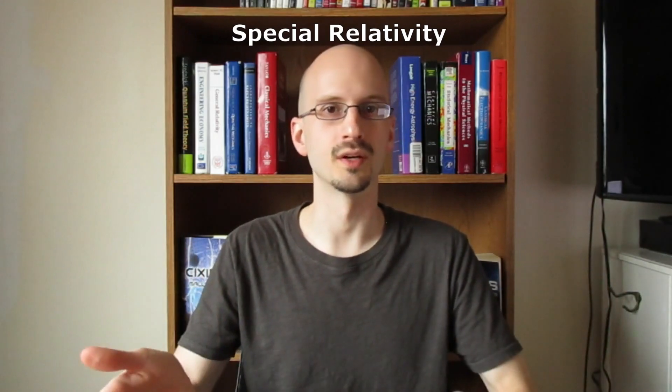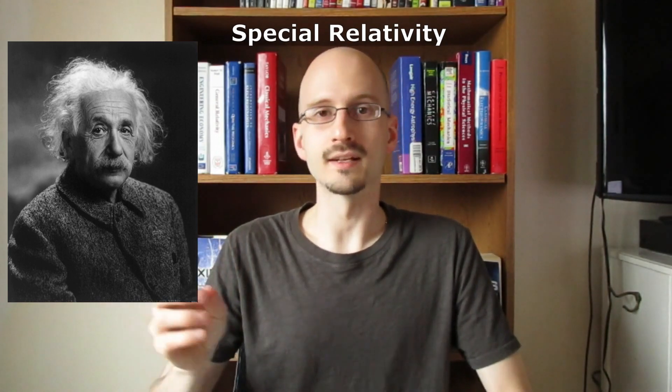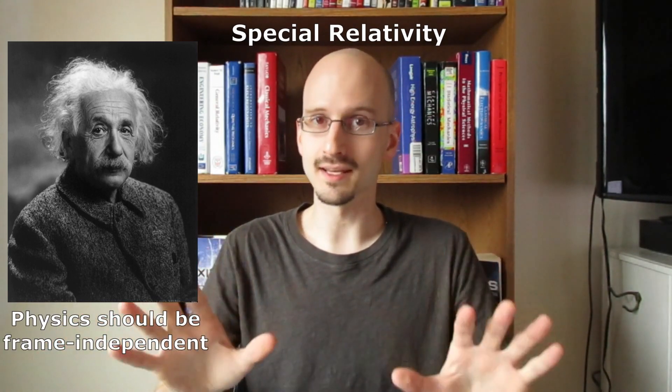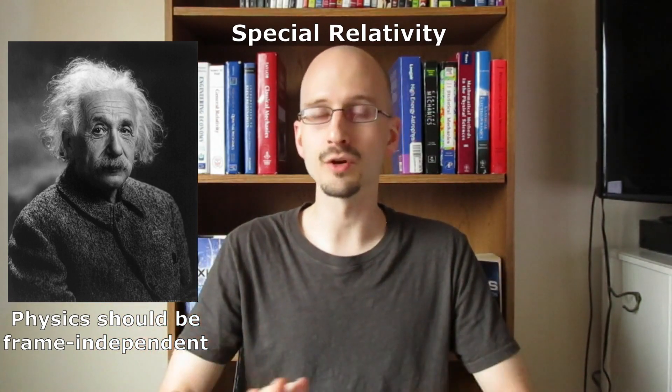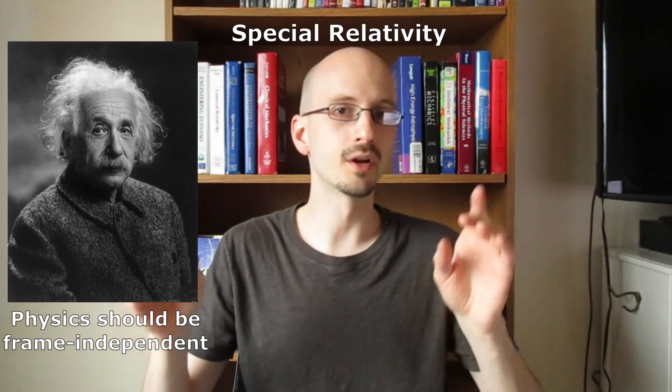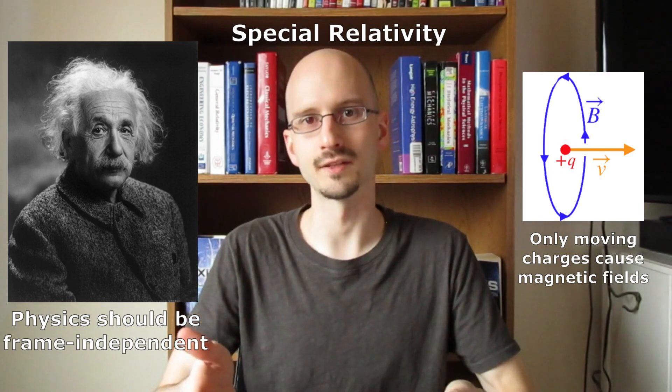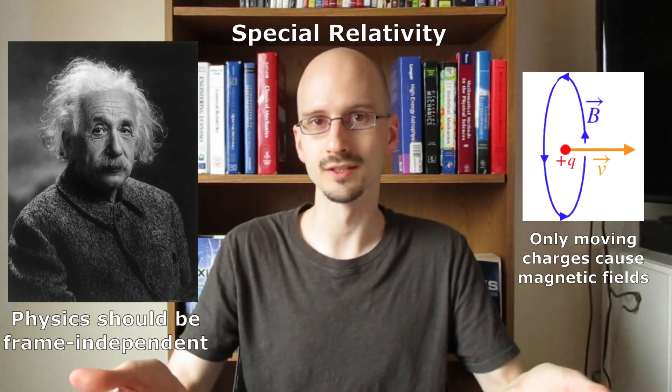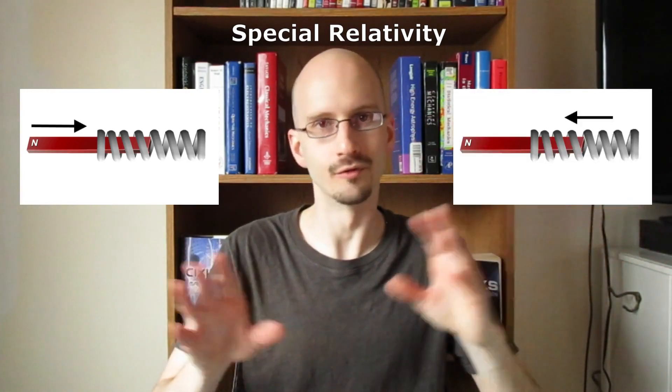This leads us to special relativity, which came about from Einstein thinking about two ideas that seem to contradict. On the one hand, physics was supposed to be the same in all reference frames. That means no matter how fast you're going or in what direction, all physics is supposed to be the same. But on the other hand, only moving charges cause a magnetic field. Stationary charges don't.